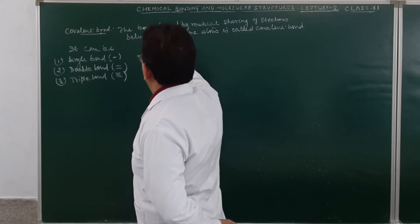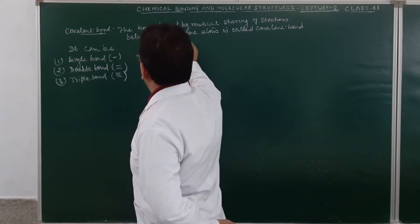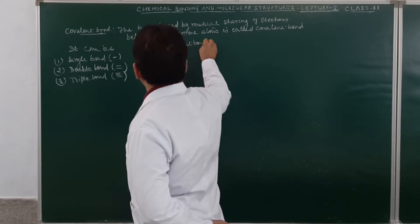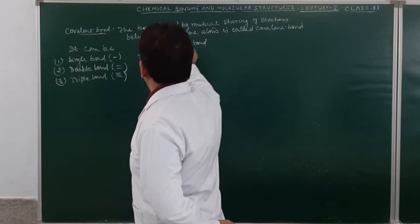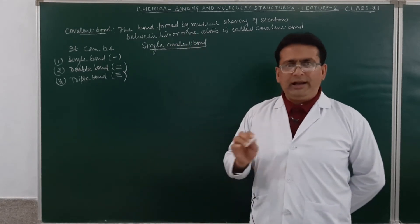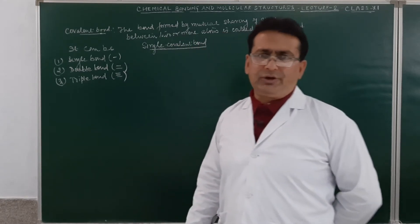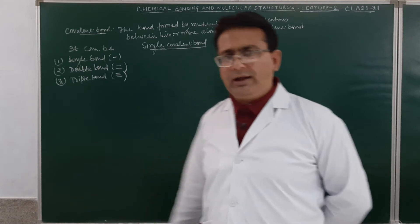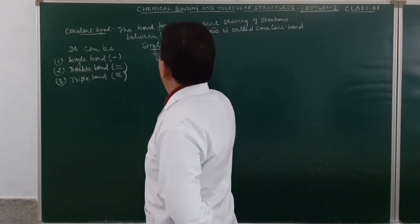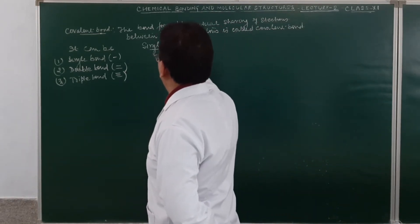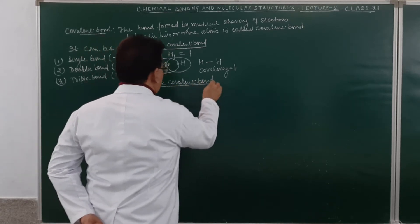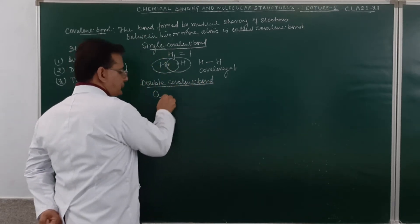Good morning students. In our previous lecture we started with the discussion of chemical bonding and molecular structure. I told you what chemical bonds are and what causes the formation of a chemical bond. I also discussed the various types of chemical bonds, including a detailed discussion of the electrovalent bond, or ionic bond.